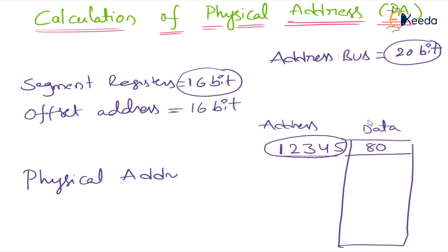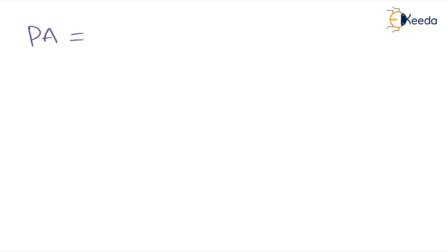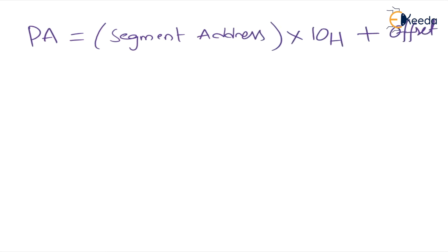So what is the formula for physical address? The formula is: physical address = segment address × 10H + offset address. That is the formula for physical address. We must calculate physical address because the address bus size is 20 bit but our registers are 16 bit. In order to access the address location, we must calculate the physical address.